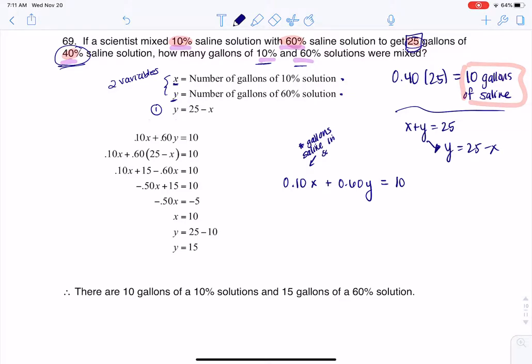from the 10% solution. This is the number of gallons of saline from the 60% solution. So we got some saline from the 10% solution, some saline from the 60% solution, we knew that totaled out to 10 gallons. And that's where equation two is coming from.